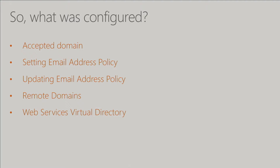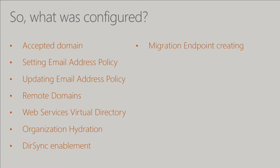So what's configured? We configure your accepted domain, remote domains, and update your email address policy. All the things that are configured in a hybrid configuration minus your connectors, org relationship, and OAuth settings. We still configure email address policies so mail routing can work, we configure accepted and remote domains, we hydrate your tenant — all the things the hybrid app normally does are done, but under the hood. You don't have to do all this manually. FastTrack Center used to offer something like this in the form of what they called Simple MRS — this is basically an automated way of doing that.